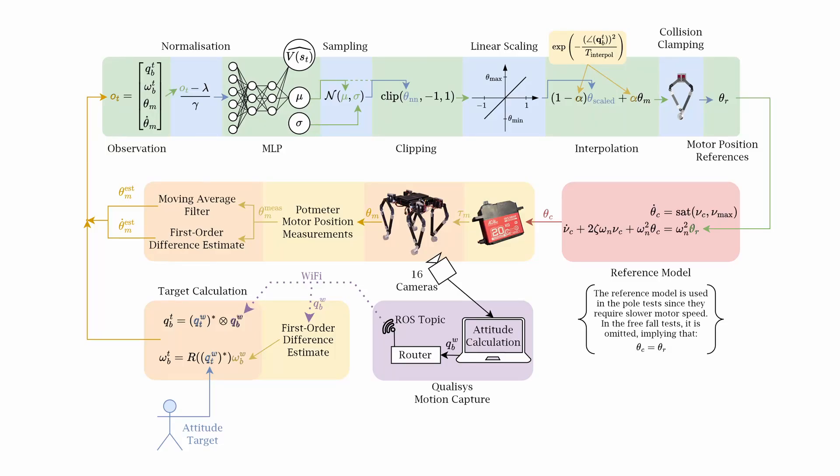Core to the policy is a three-layer MLP with the observation vector as input and joint targets as output. We use an exponentially weighted linear interpolation to reduce control effort at the target and perform a custom clamping operation to prevent self-collisions of the closed kinematic chain.